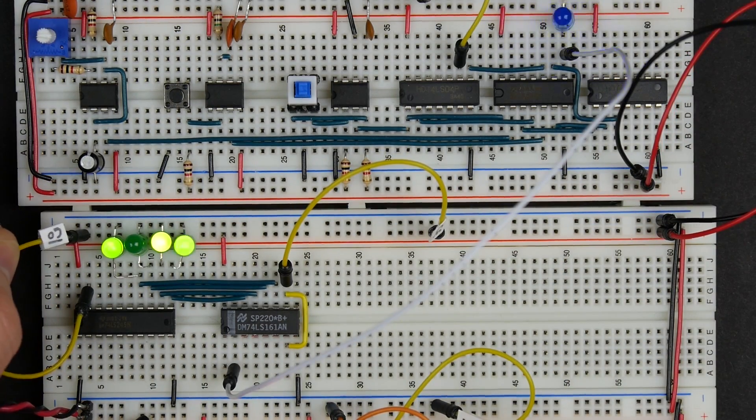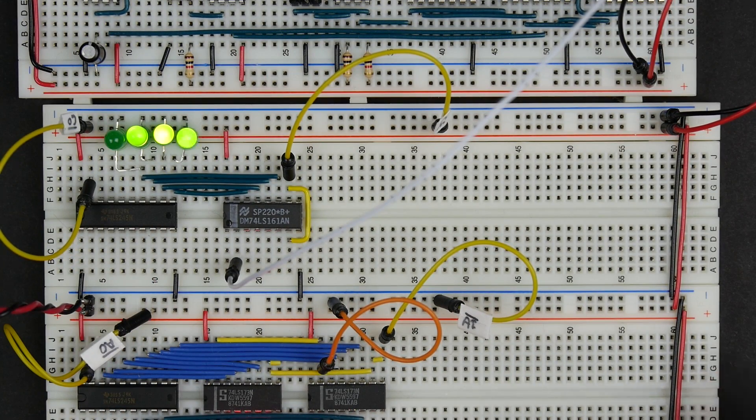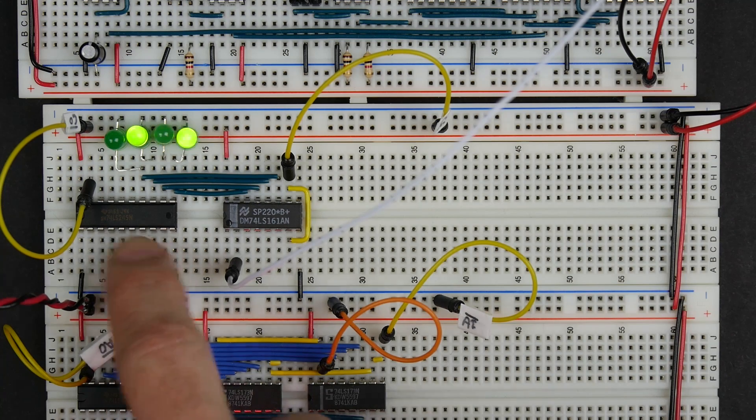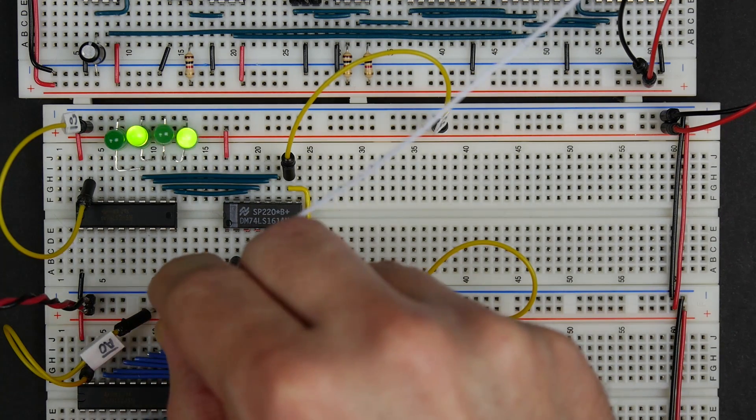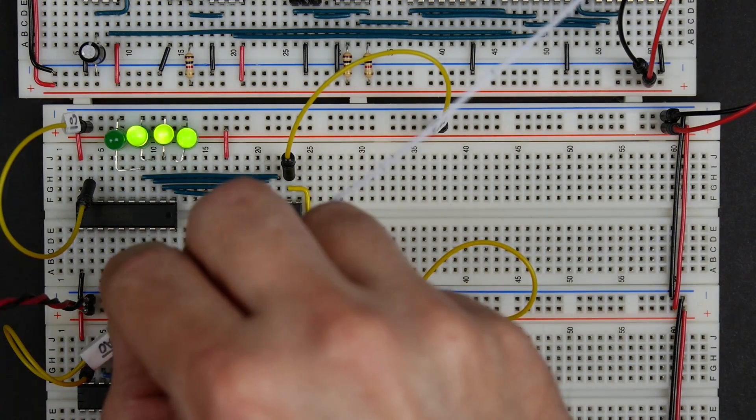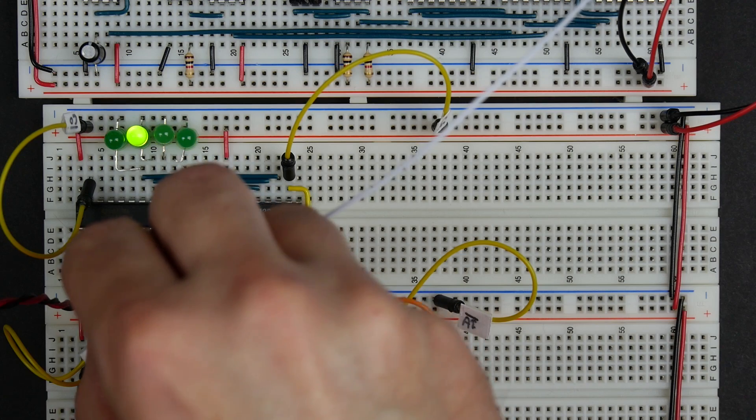So now we'll try the counter out. This is what takes the contents of the counter and puts it out on the bus. The bus is going to be connected down here on the bottom side of the 74LS245. Let's connect a couple LEDs up just to see what this is outputting. Right now it's disabled, so it shouldn't be outputting anything. It looks like that is the case. I'll just connect these four LEDs.